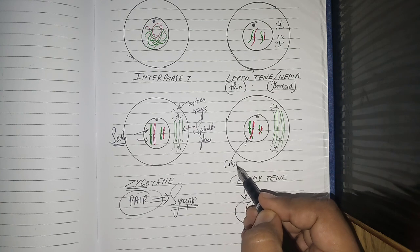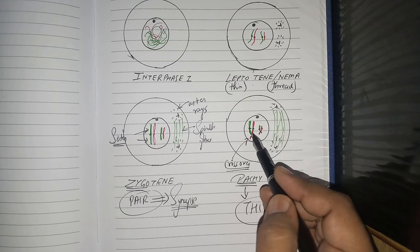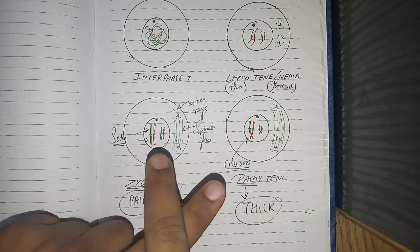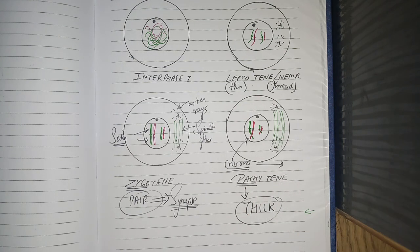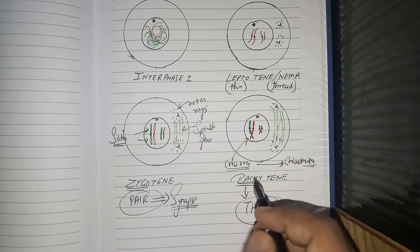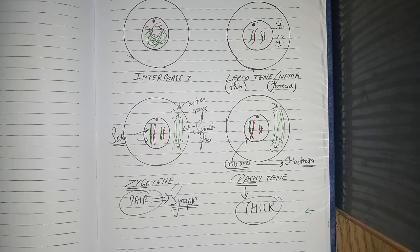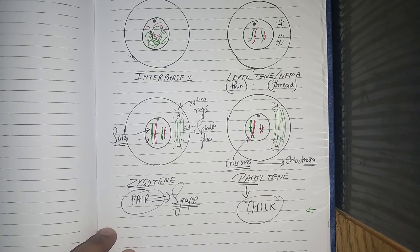The non-sister chromatids form a crossover, and that junction is called as chiasma or chiasmata. Remember, non-sister chromatids. This is the place where we get genetic recombination, and genetic recombination is very important for variation, for evolution. So remember this.